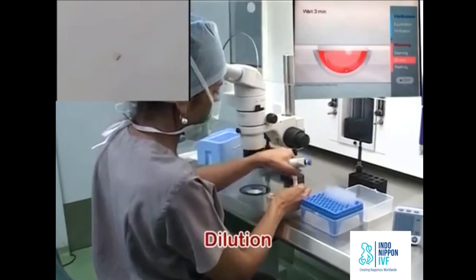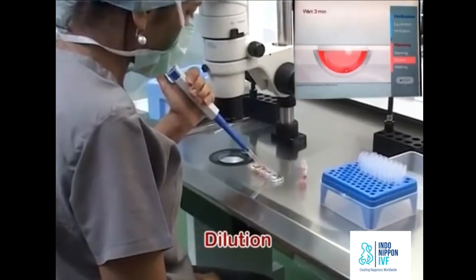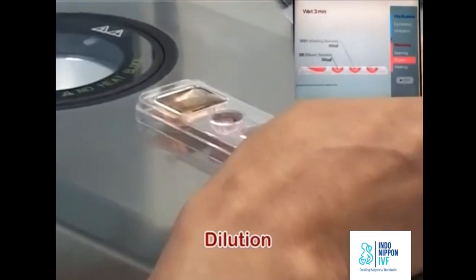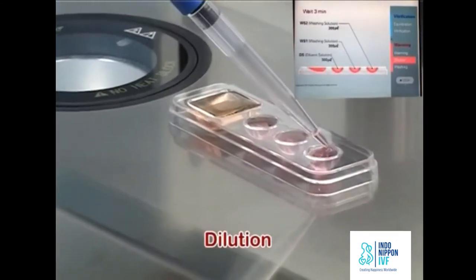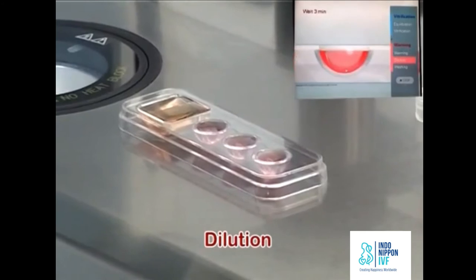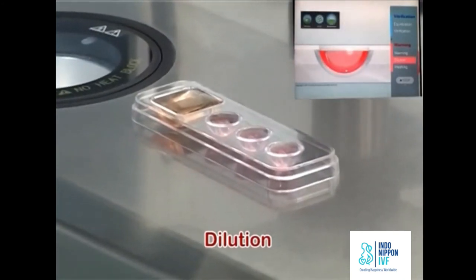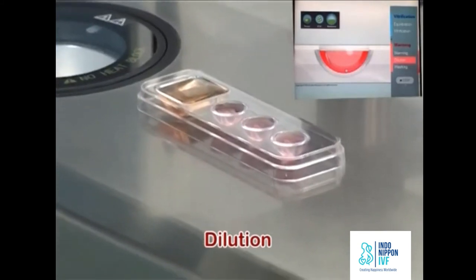While waiting, fill the WS1 and WS2 wells with 300 microliters of washing solution.